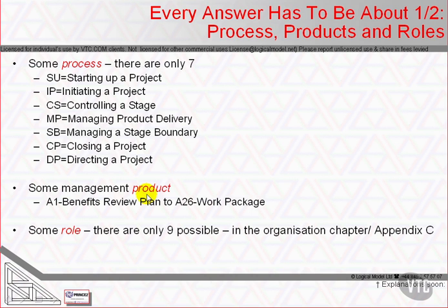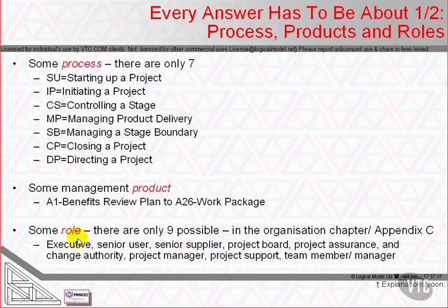These processes and records and baselines are manipulated by somebody who fulfills some role within the project. There are nine possible roles. The executive, senior user, and senior supplier together comprise the project board. The executive is the decision maker, the senior user says what's required, and the senior supplier provides the expertise to make it. These three roles together retain assurance accountability and also hold change authority, but they may delegate both project assurance and change authority activity to other people, normally on the basis of people with more expertise and or time.